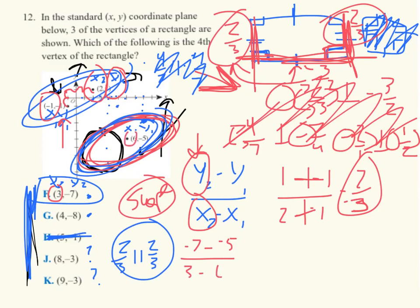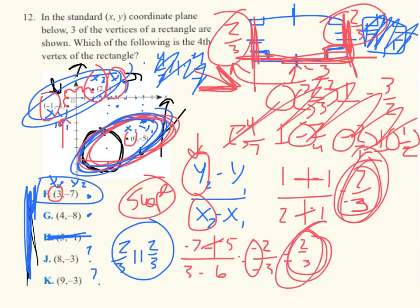This is negative 7 minus negative, that turns out positive, so negative 7 plus 5 is negative 2, and then 3 minus 6 is negative 3. What happens when you have two negatives? They become a positive. Is that what we want? Do we want two thirds? Do we want two thirds all day?